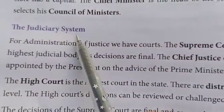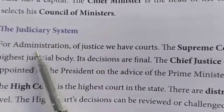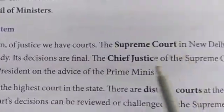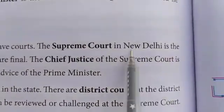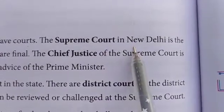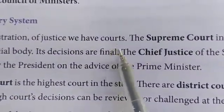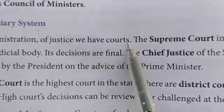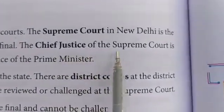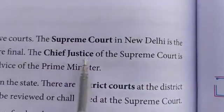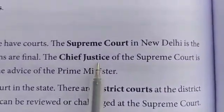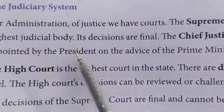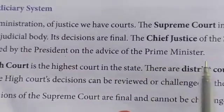About the judiciary system: for the administration of justice we have courts. The Supreme Court is in New Delhi and it is the highest judicial body. Its decisions are final — whatever the Supreme Court says must be followed by everyone in the country. The chief justice of the Supreme Court is appointed by the president on the advice of the prime minister.